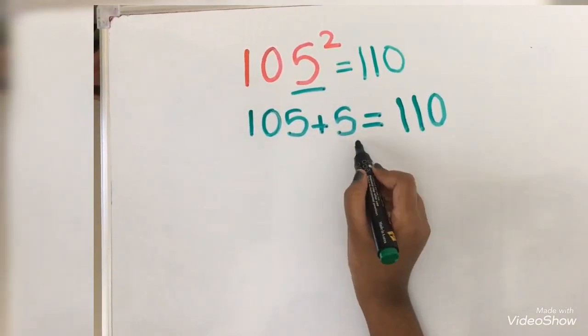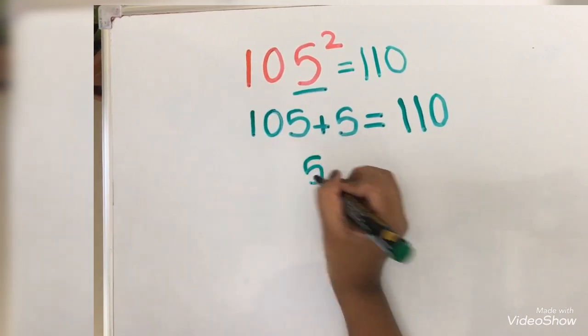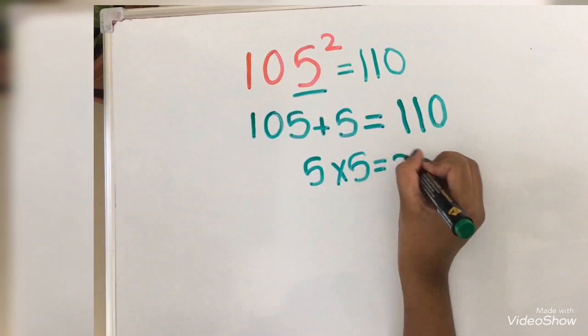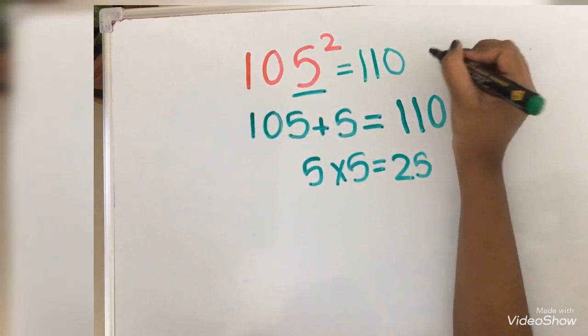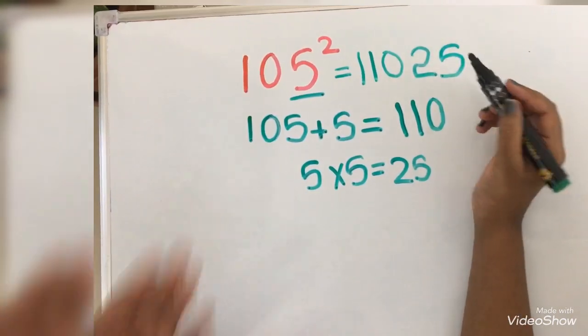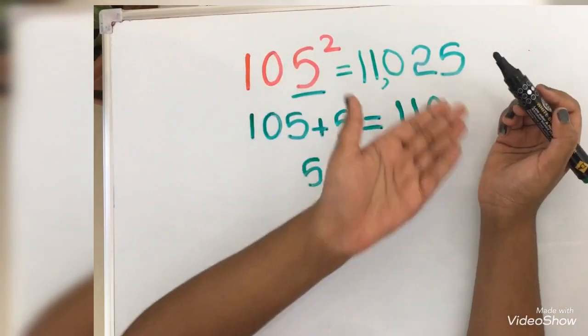Now we are going to multiply 5 into 5. 5 into 5 equals 25. Let's write it here. Because it is a two-digit number, the answer is 11,025. Bye!